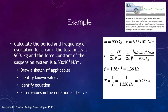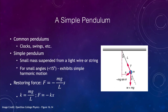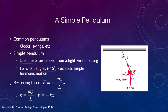Now let's look at the other example of simple harmonic motion mentioned earlier: the pendulum. A pendulum is very common — think of a swing or a clock. A simple pendulum is a small mass suspended from a light wire or string. We want the mass of the bob at the bottom to be much greater than the mass of the string, so we can essentially ignore the string's mass. We also need small angles — less than about 15 degrees — to observe simple harmonic motion.